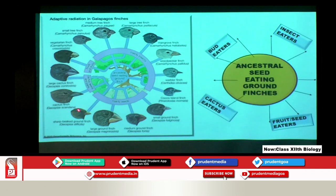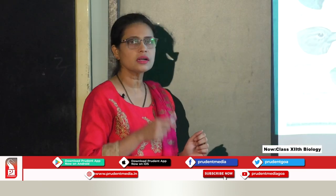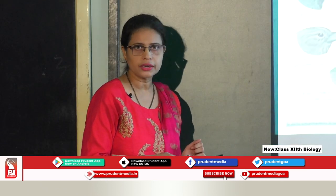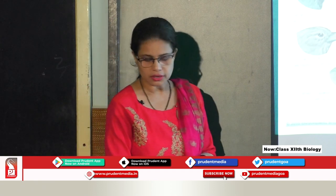From a common stock — all seed-eating type — you got this kind of variety. This is called adaptive radiation: beginning from one point and literally radiating to different geographical areas. All are black finches but see the difference in their beak pattern. Some are cactus feeders, some are insect feeders, some are seed feeders. Even among seed feeders there is variation in beak because some seeds are very small and hard, some may be soft, some may be big.